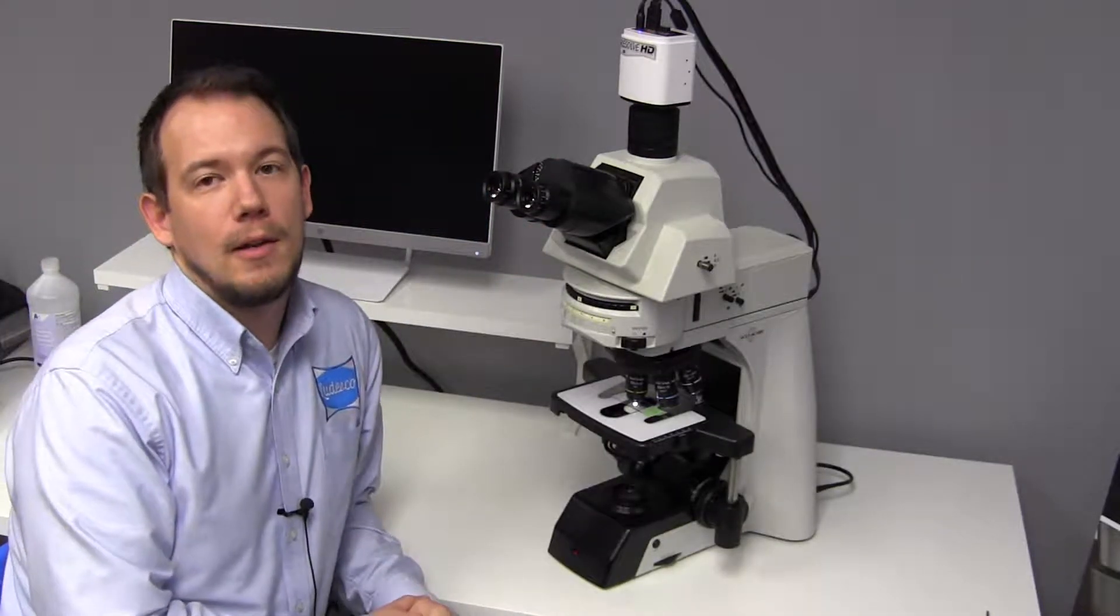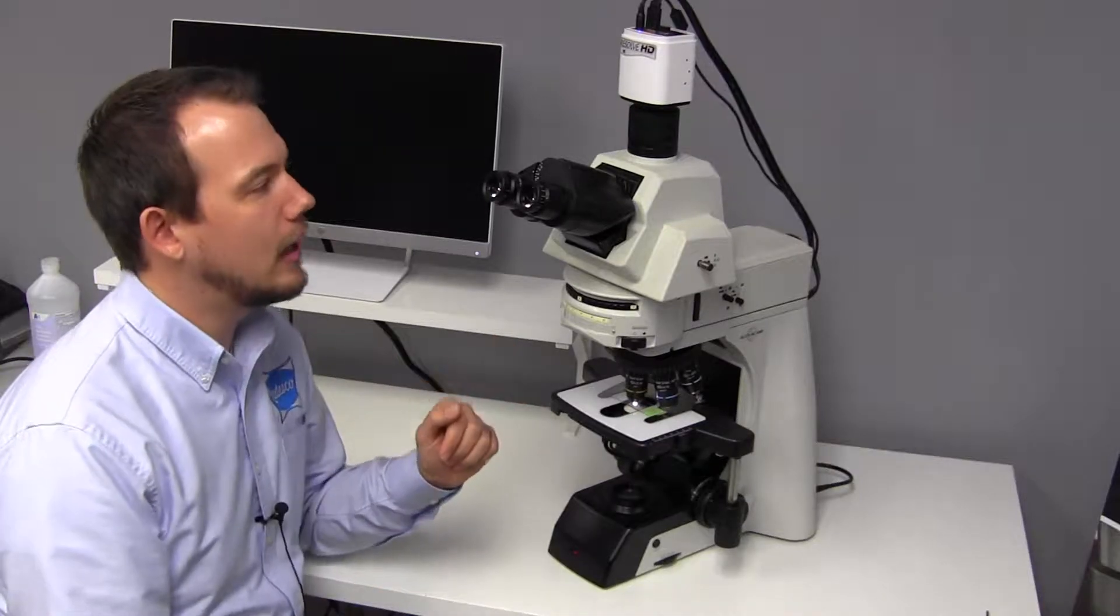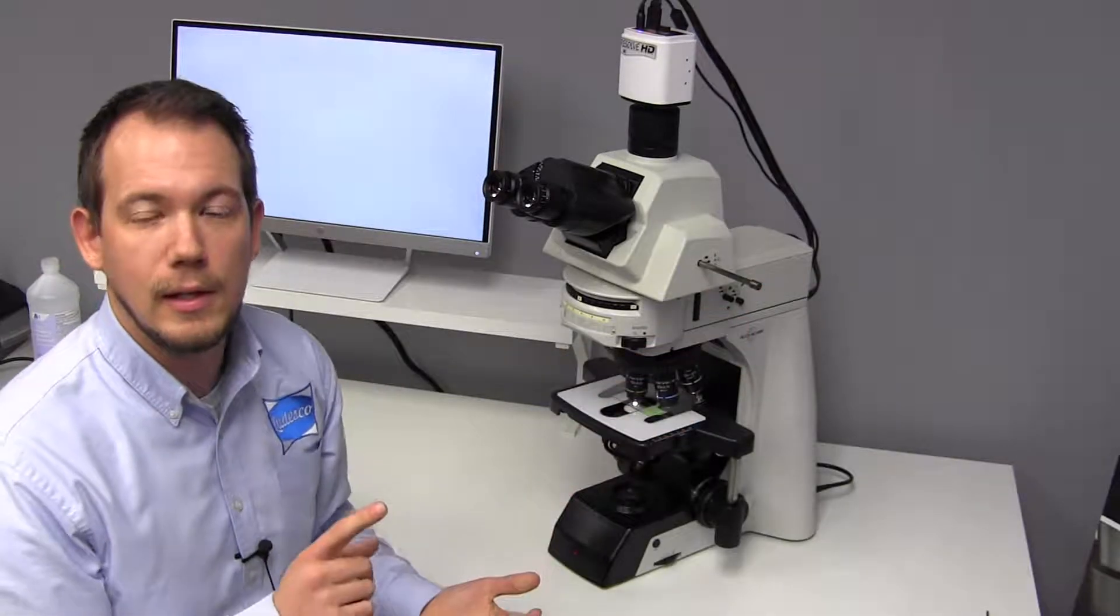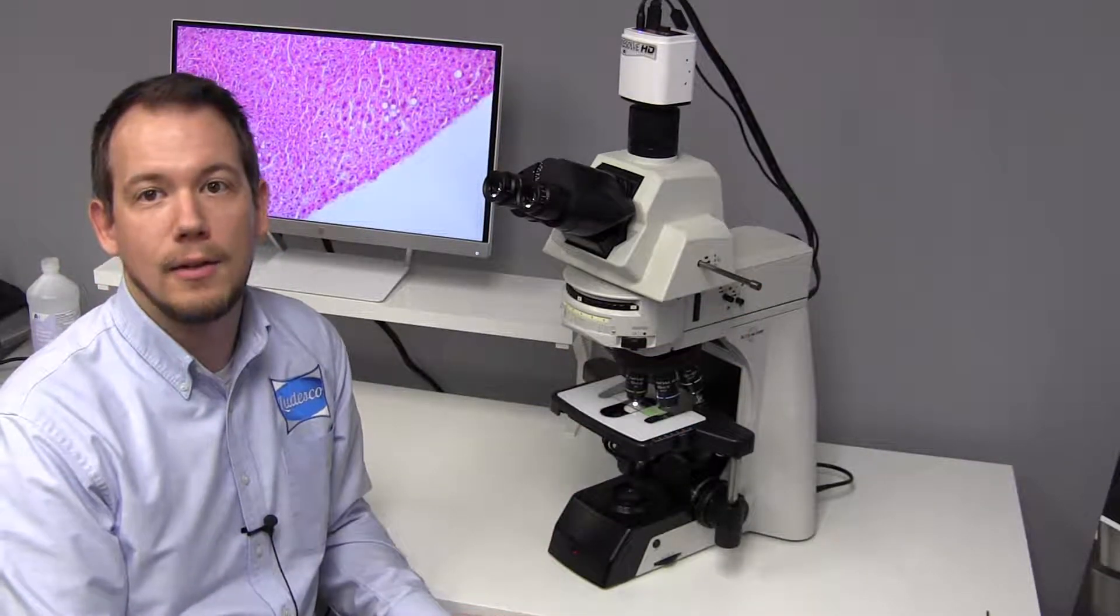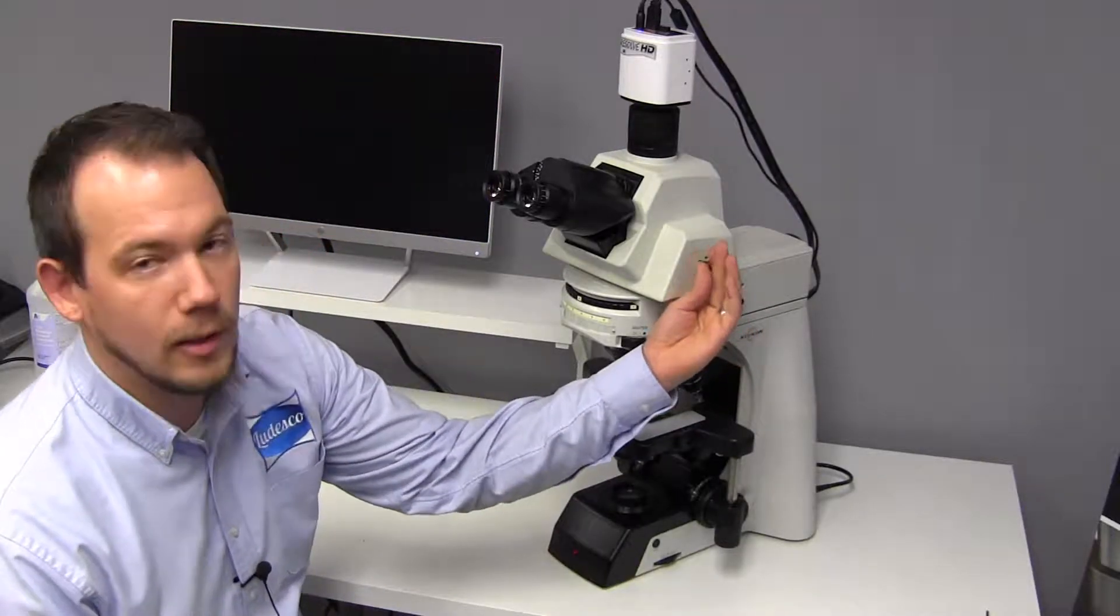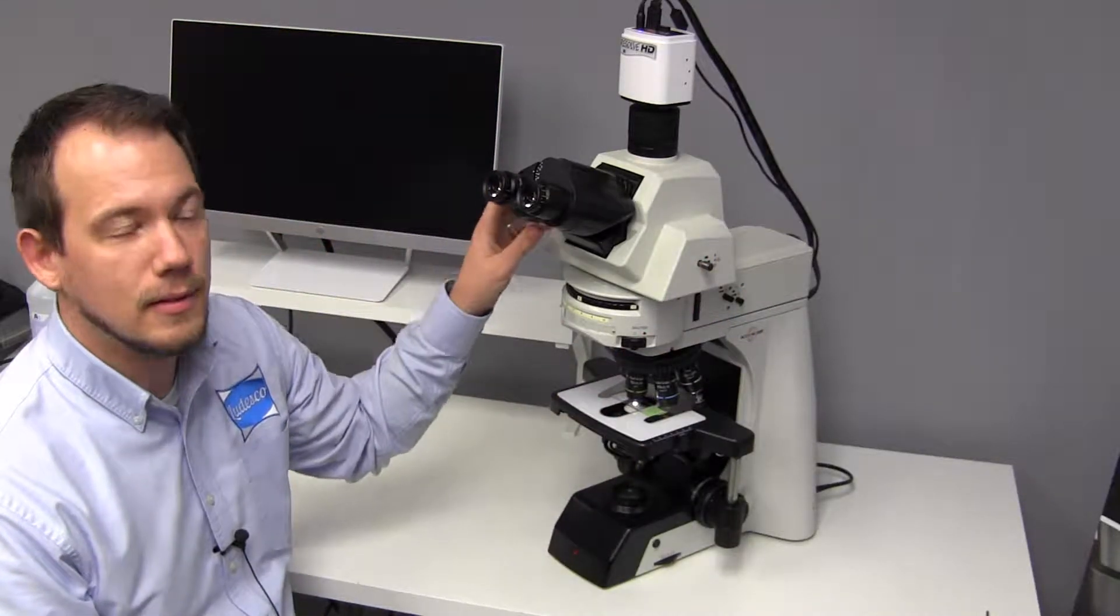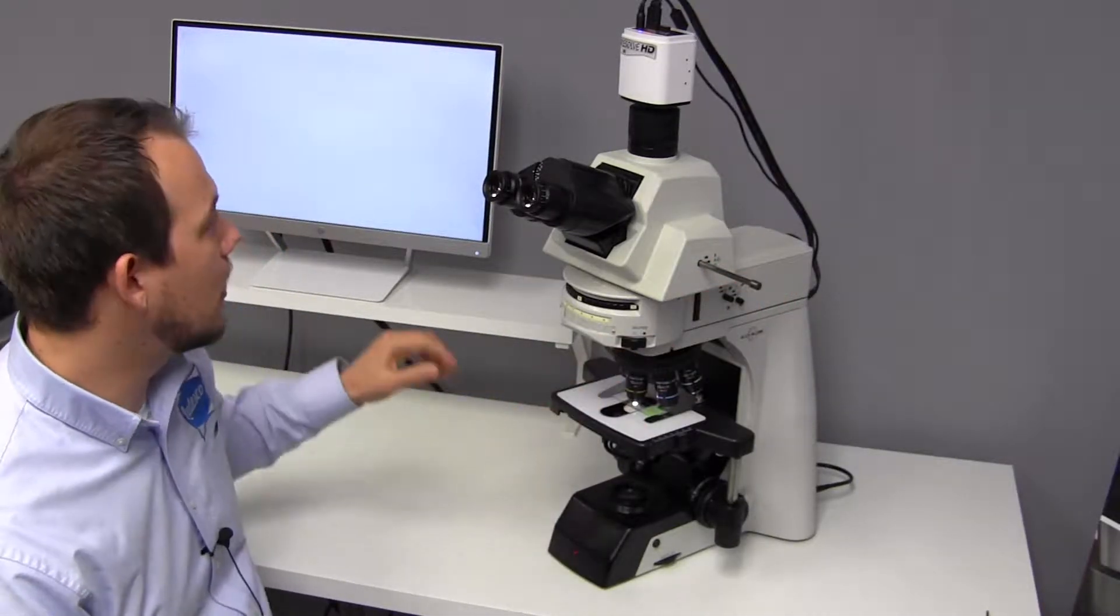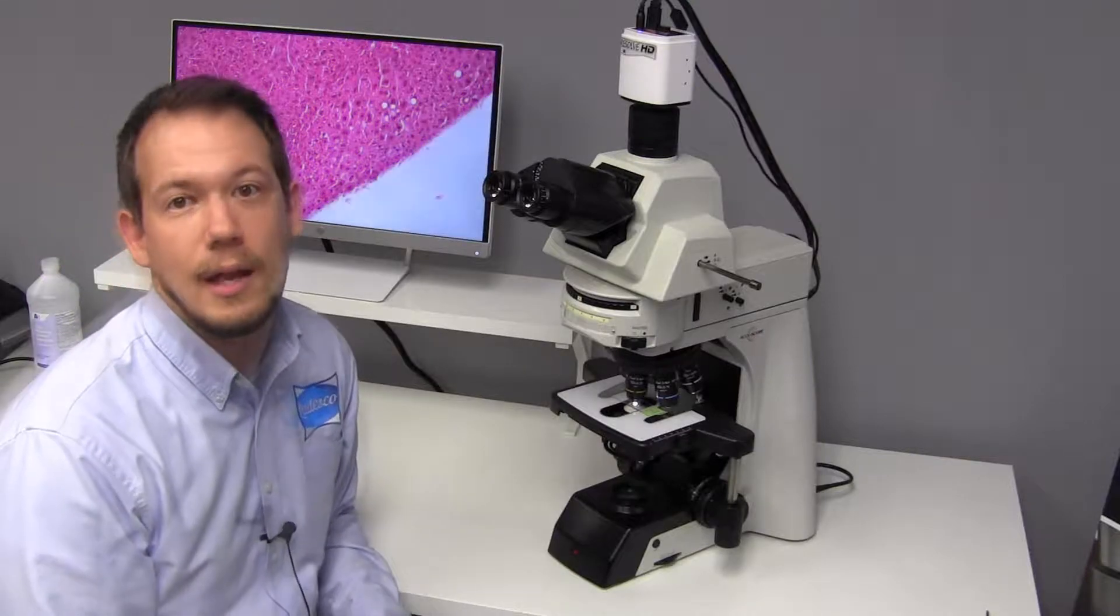If you are using a camera and you decide to go with the trinocular viewing head, there is a three position beam splitter built into both the fixed trinocular and ergonomic trinocular viewing head. The first position being 100% of the light to the eyepieces. The second position would be an 80-20 split and the third position is 100% light going to the camera.